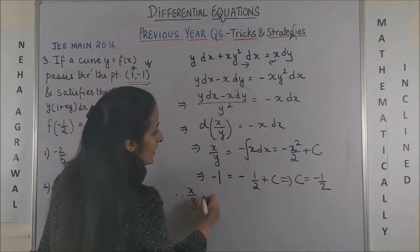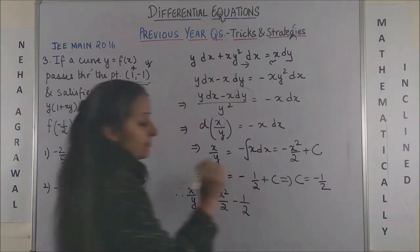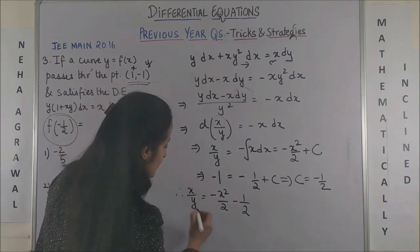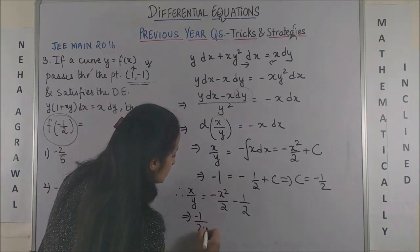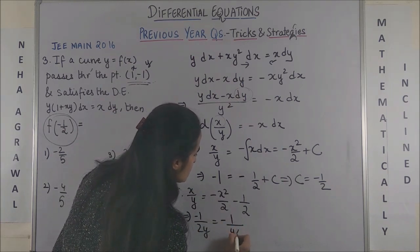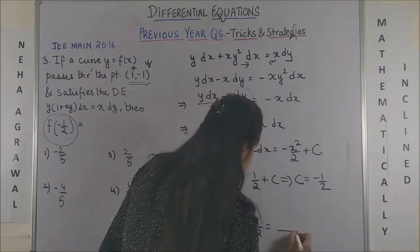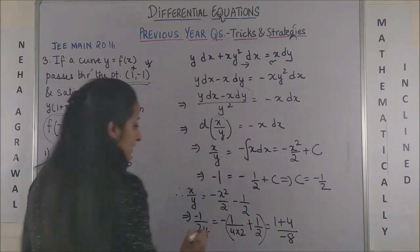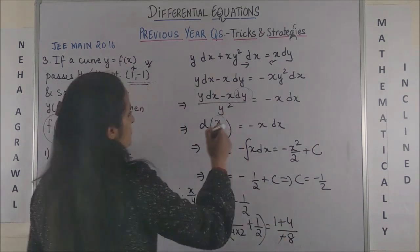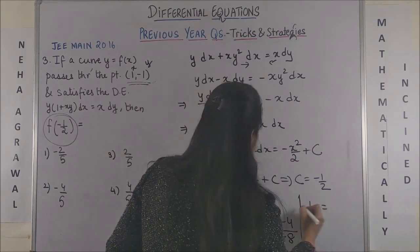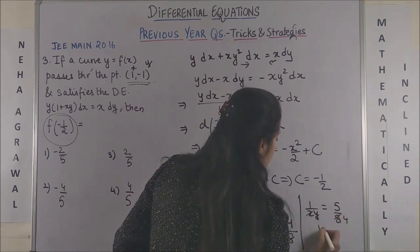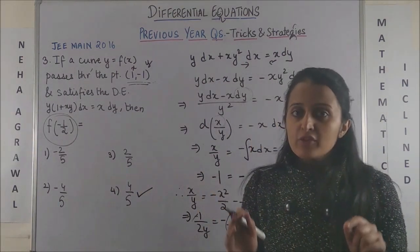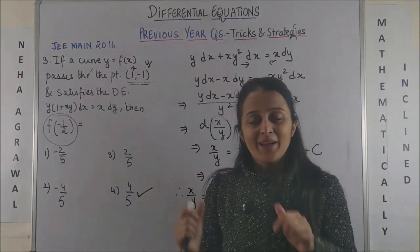The equation is x/y = −x²/2 − 1/2. To find f(−1/2), put x = −1/2: (−1/2)/y = −(1/4)/2 − 1/2 = −1/8 − 1/2 = −5/8. So 1/(2y) = 5/8, giving y = 4/5. The fourth option is the answer. Be very careful with the plus or minus sign because the options look very similar.